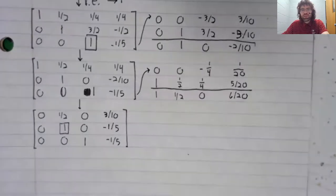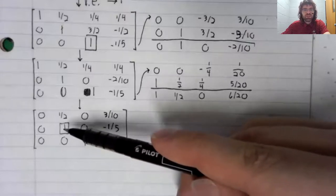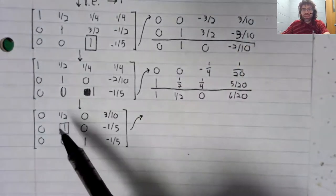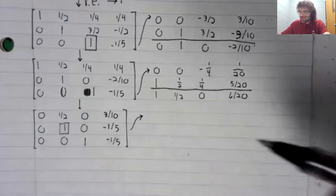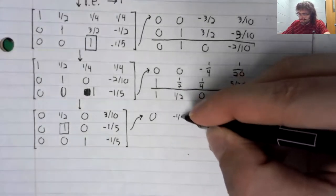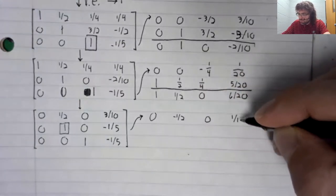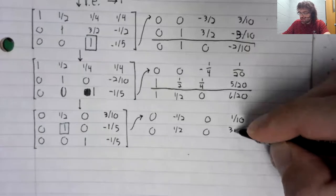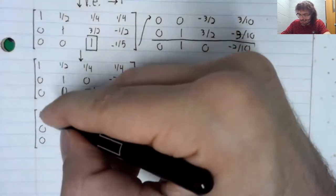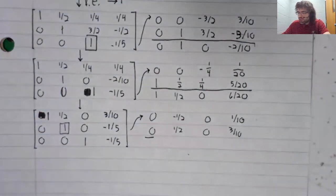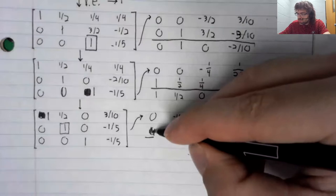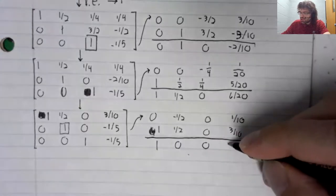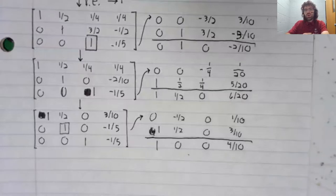We move up and to the left. And now we'll make everything above this leading entry be zero. So we'll multiply the second row by negative one-half. And we will add that to the first row. Let me see what happened. I made a copying error. We will add that to the first row. And we'll get our new first row.